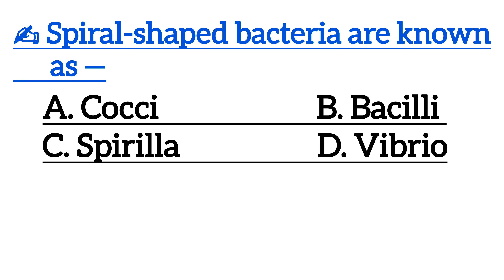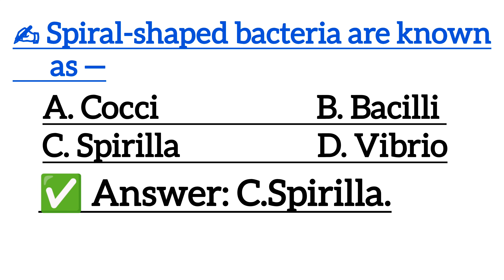Next one is: Spiral shaped bacteria are known as — Option A: Cocci, Option B: Bacilli, Option C: Spirula, Option D: Vibrio. Correct answer is Option C: Spirula.